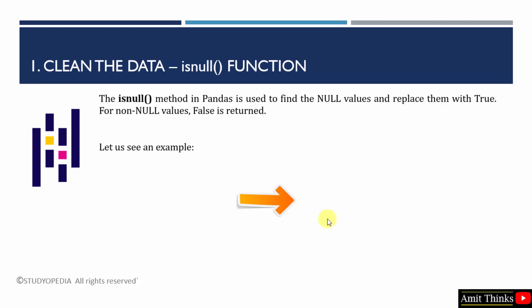Let us start with the first example — cleaning data using the isnull function, which finds the null values and replaces them with True. The non-null values will get replaced by False. Let's see the example.